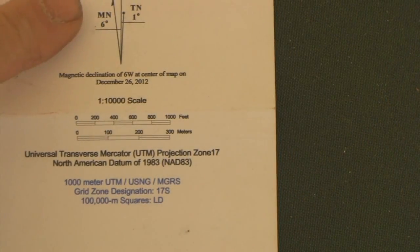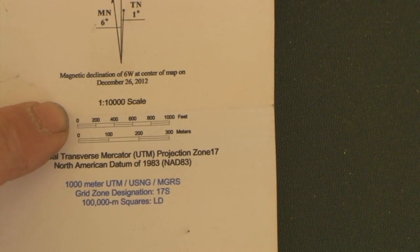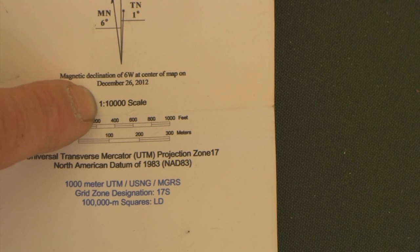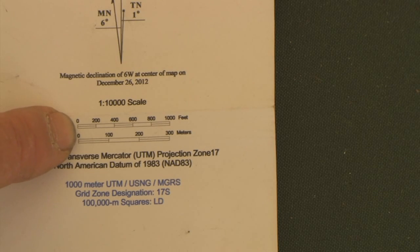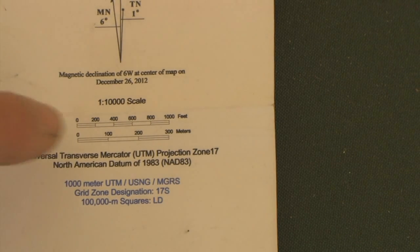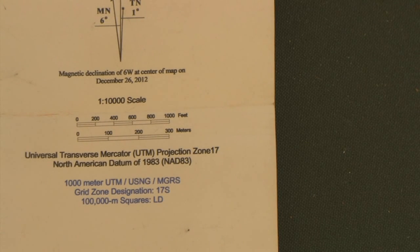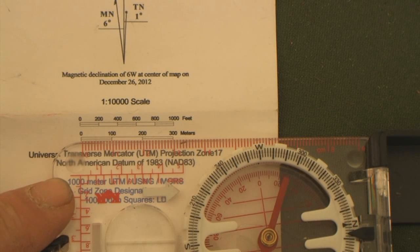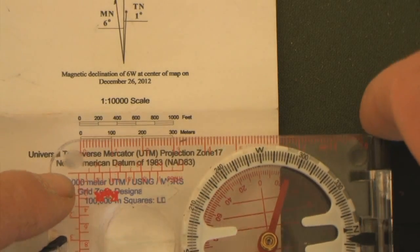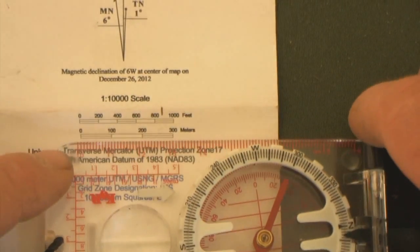While we're down here at the declination diagram, let's look right below that — that gives us the scale of our map. This map says the scale is 1 to 10,000, which means one inch on this map equals 10,000 inches on the ground. Below that you'll see two scales, one in feet and one in meters. I prefer to work in meters — it all works in tens and for people with dyslexia like me, it just makes it simple. If I lay my centimeter scale on the meter line, it tells me that three centimeters equals 300 meters, so for every centimeter on my ruler, that's 100 meters.